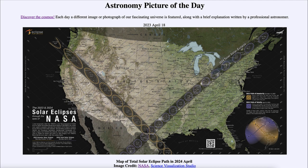The closer you are to the center of the path, the longer the eclipse will last. If you're right on the edge it will be a very brief total solar eclipse; if you're in the middle it will last several minutes, depending on the exact positioning of the sun and the moon. So do keep your eyes out — we'll be hearing a lot more about these two coming eclipses crossing the United States. That was our picture of the day for April 18th of 2023. Have a great day everyone, and I will see you in class.